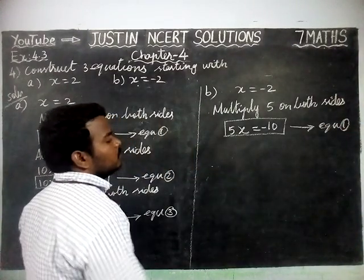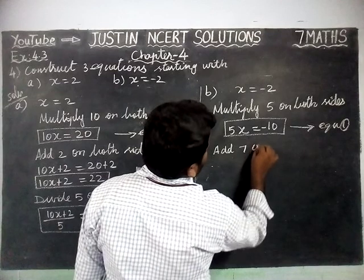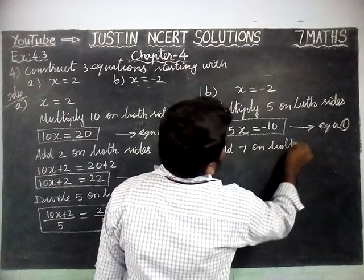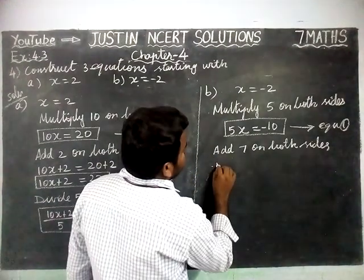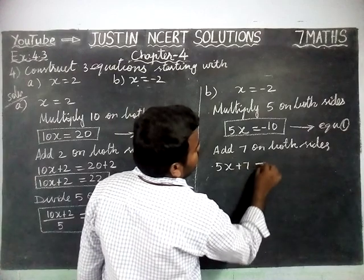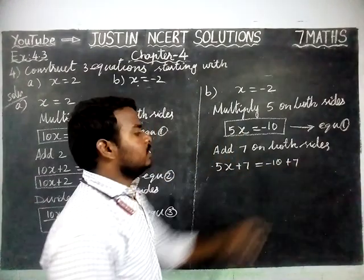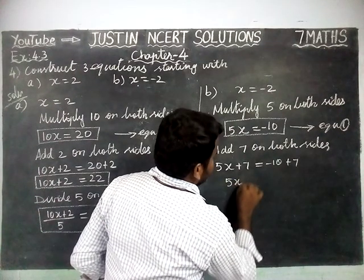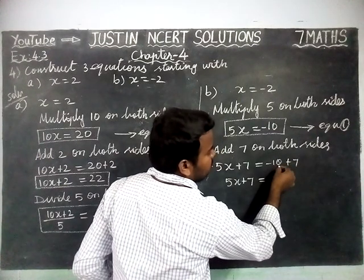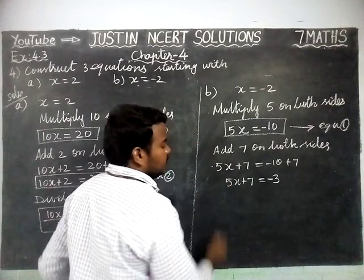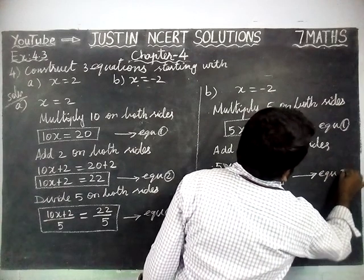Now, we are going to add 7 on both sides. Instead of adding, we can subtract also. So, 5x plus 7 is equal to minus 10 plus 7. The signs are different, so we subtract. The difference is 3, and the greatest number 10 has a minus sign, so it is minus 3. Therefore, 5x plus 7 is equal to minus 3. This is equation 2.